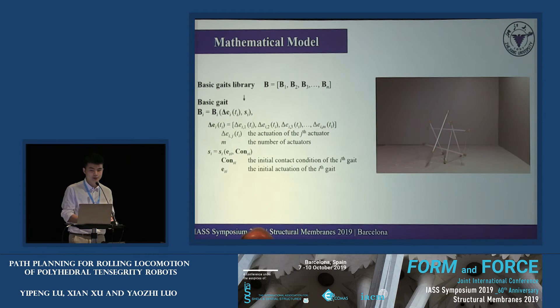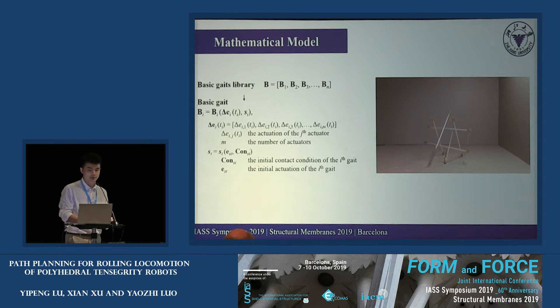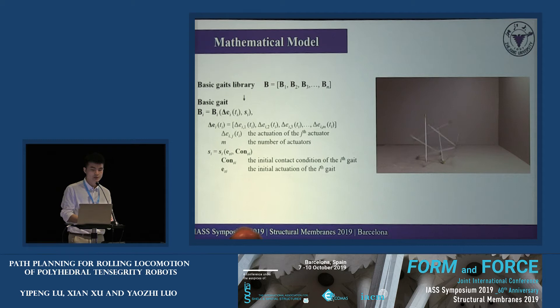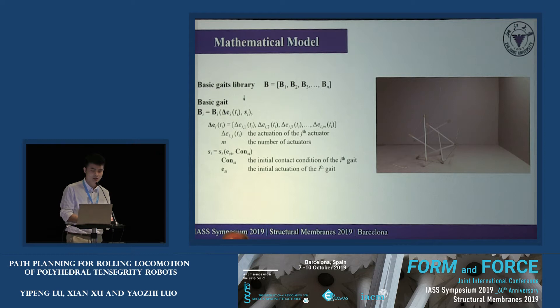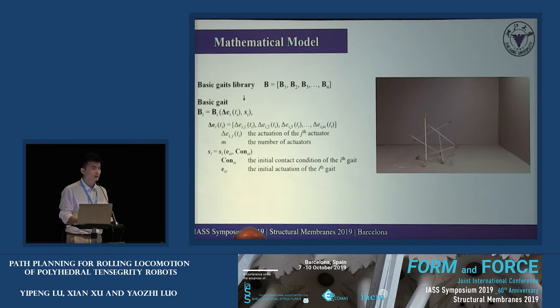Next, the mathematical model is set up. The tensegrity robot considered here has the following properties: tension elements can only carry tensile force; compression elements are rigid and able to carry both compression and tensile force; and the kinematic property of a basic gait is independent of the terrain. The matrix B is the basic gaits library whose components are basic gaits. A basic gait is a function of an actuation vector E_i and a state vector S_i. The actuation vector describes the actuation of each actuator, and the state vector describes the initial contact condition and initial actuation. With the given basic gait, the tensegrity robot changes its configuration and achieves rolling by deformation.